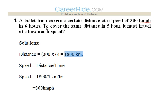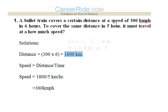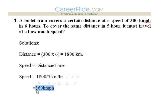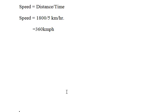Now to cover the same distance, that is 1800 km, in 5 hours, it must travel at how much speed? We need to calculate speed here. Time is given as 5 hours and distance we have calculated as 1800 km. So speed would be 1800 divided by 5, that is 360 km per hour.